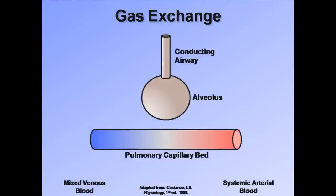Here is a schematic representing the gas exchange that occurs in the lungs. Oxygen-poor blood, shown in blue, enters the pulmonary capillary bed from the right side of the heart, where it travels past the alveoli. As it does so, there is an exchange of carbon dioxide and oxygen across the alveolar capillary membrane before the now oxygen-rich blood continues to the left side of the heart and onward to the systemic circulation.